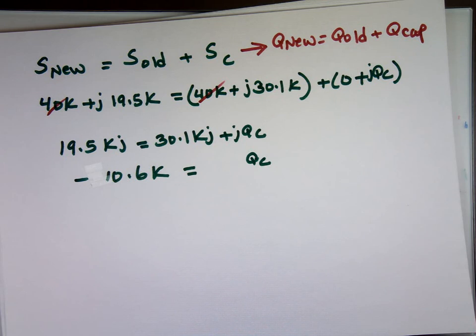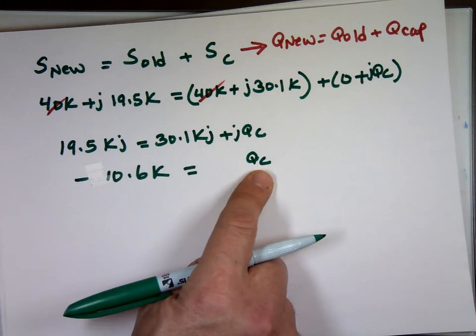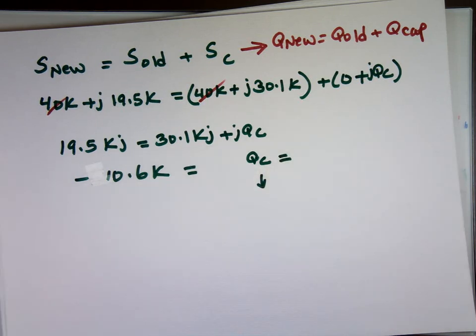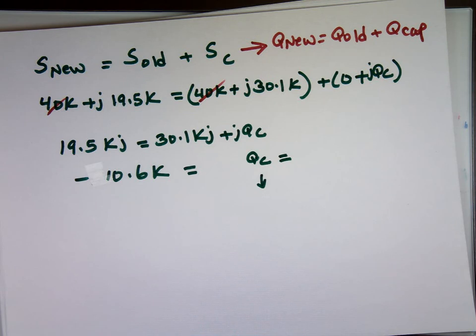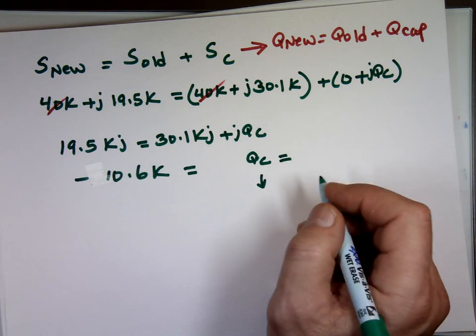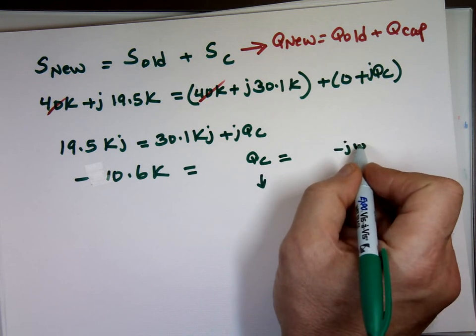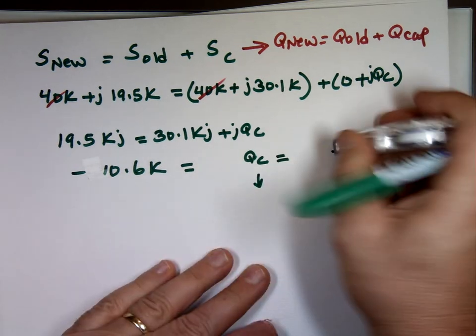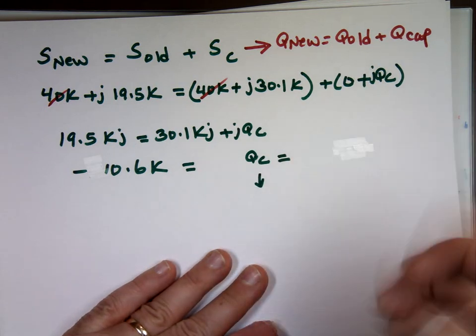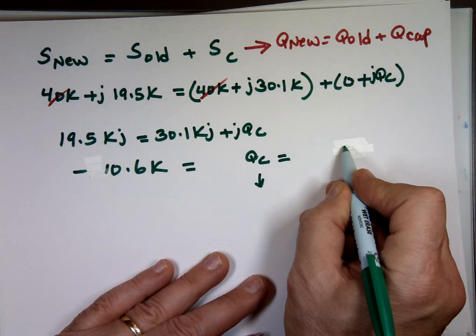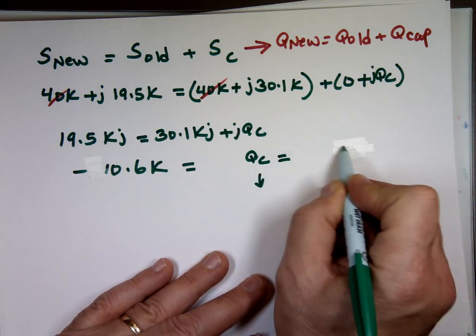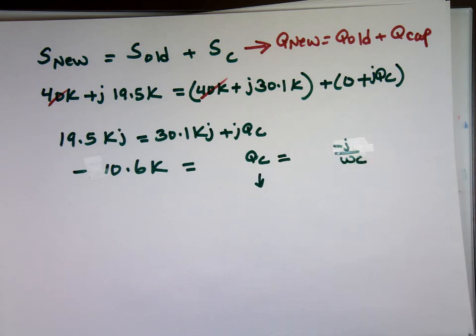Hmm. How do we go from QC to C? What's that number equal to? Anyone? That have to do with the negative J omega? Okay. You say what? Negative J omega. Or J divided by. Negative J over omega C. That's the impedance, right? So isn't that, let's see. The impedance for that is negative J over omega C. Right? The impedance is negative J over omega C. That's the Z value.